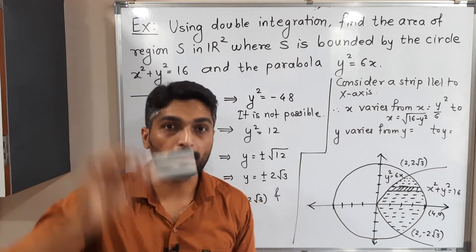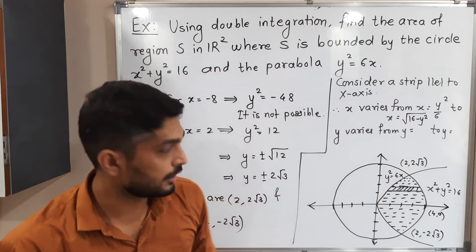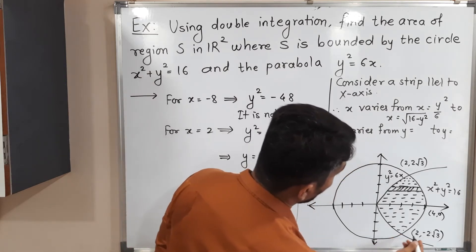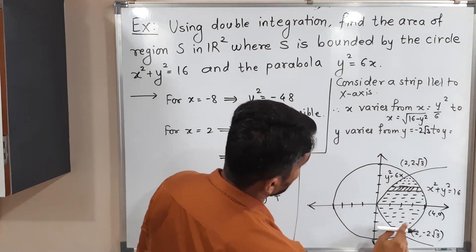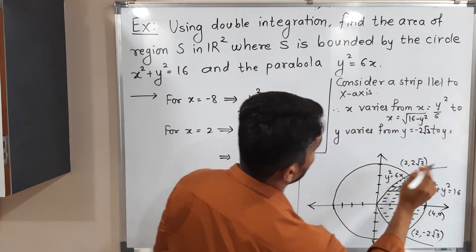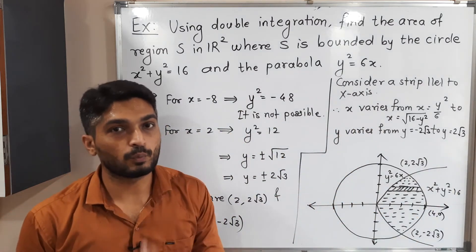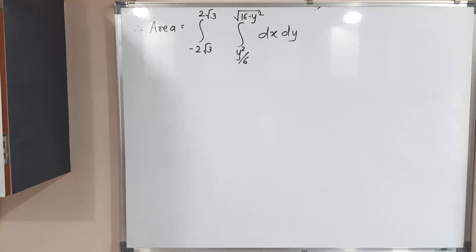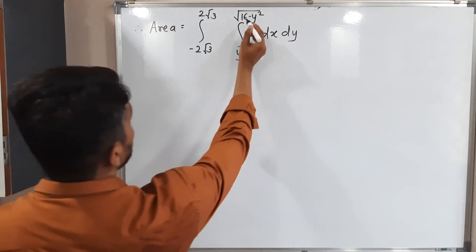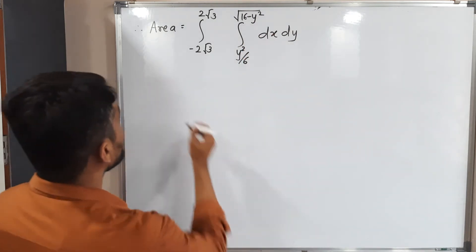The strip moves from bottom to top, covering each and every point of the region. It starts at y = -2√3 and goes up to y = 2√3. In this way we have the limits of both x and y.